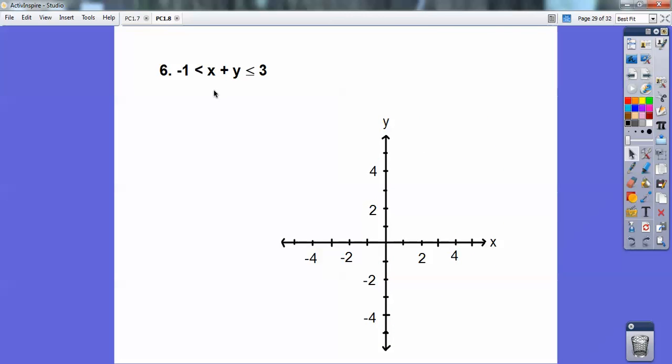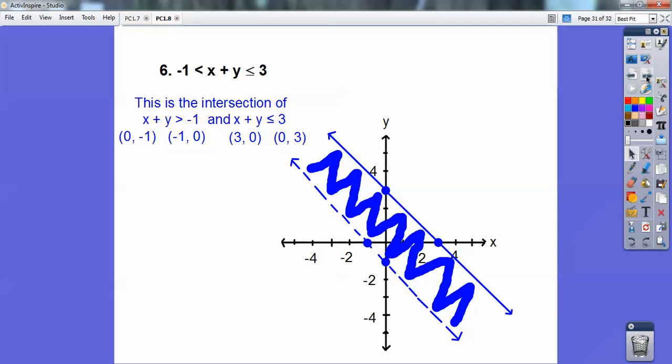And then this guy right here, this is an intersection graph. So I'm going to graph x plus y less than or equal to 3, and x plus y greater than negative 1. This one's going to be dotted. This one's going to be solid. And it's the intersection where they overlap each other. So I'm going to go ahead and graph those guys.